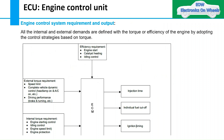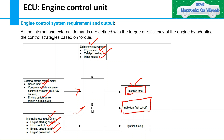There are three types of requirements. First, efficiency requirements: engine start, catalyst heating, and idle control. Second, external torque requirements: speed limit, complete vehicle dynamic control, driving performance, braking, and turning. Third, internal torque requirements: starting control, idling control, engine speed, and engine protection. The outputs to achieve these requirements include injection timing, individual fuel cutoff — for example, giving fuel to two cylinders and not the other two — and ignition timing.